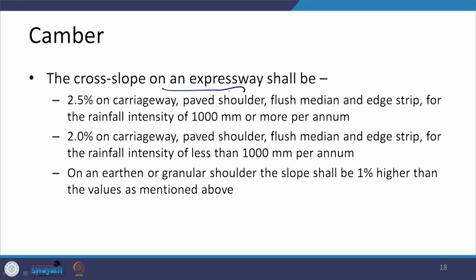For expressways, the cross slope on the carriageway, paved shoulder, flush median, or the 0.75-meter edge strip is 2.5% if rainfall intensity is 1000 mm or more per annum, and 2% otherwise. For earthen or granular shoulders, the slope shall be 1% higher than those values — becoming 3.5% and 3% respectively.